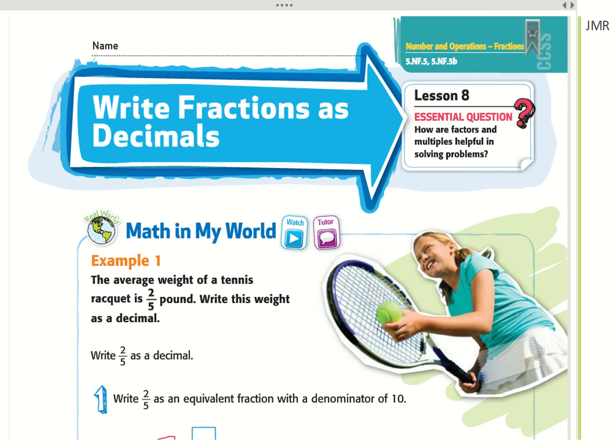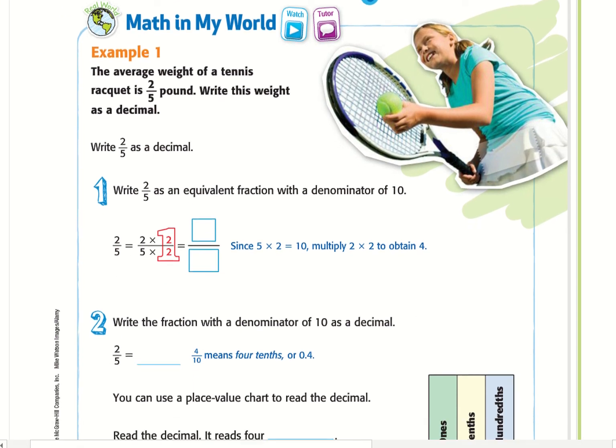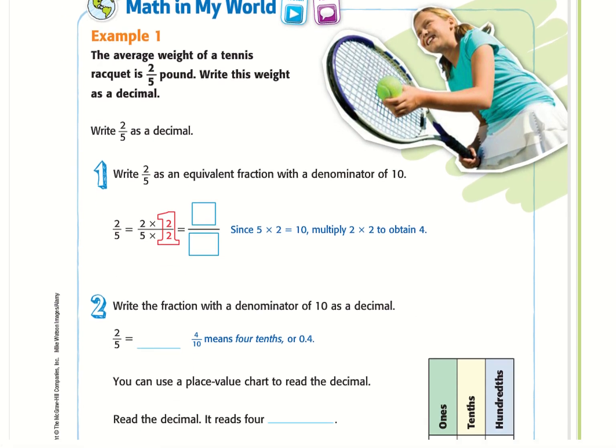Hello, welcome to chapter 8 lesson 8. We're going to write fractions as decimals. Example 1: The average weight of a tennis racket is 2 and 2/5 pound. Write this weight as a decimal, so write 2/5 as a decimal.